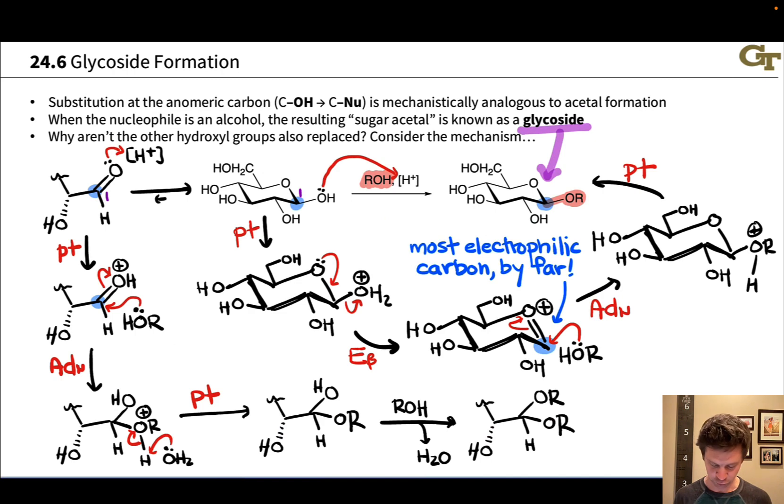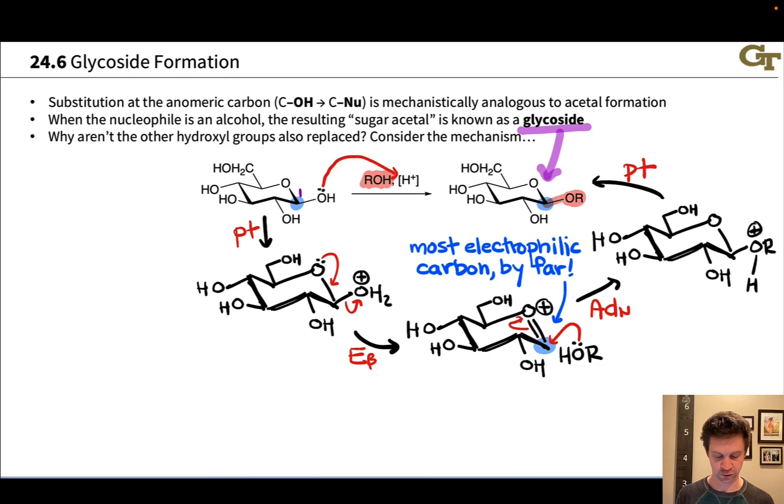I actually want to look at this one more time, cutting out the acetal analogy that we made just to make it a little more clear which steps are specifically involved in glycoside formation. So we start by protonating at the anomeric hydroxyl group right here. Not that other protonations don't happen, but this is the one that's mechanistically productive. Then we beta eliminate water to create the stabilized cation here.